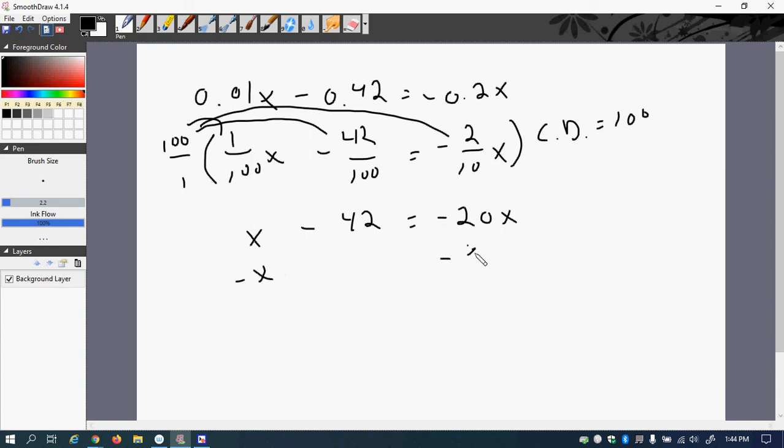All right, so then I can go ahead and minus my x to both sides. I get negative 42 equal to negative 21x. Now I divide by negative 21, and so x is going to be... well, two negatives make it a positive, 21 goes into 42 twice, and so my answer is 2.